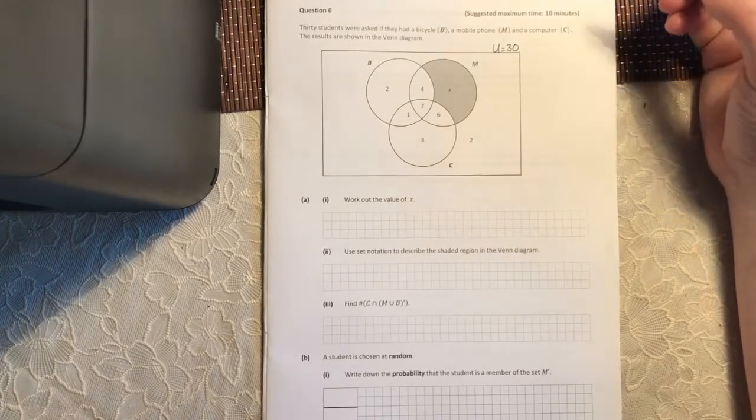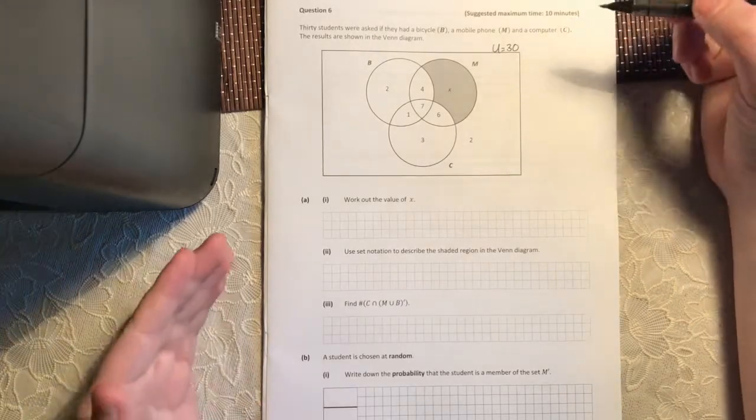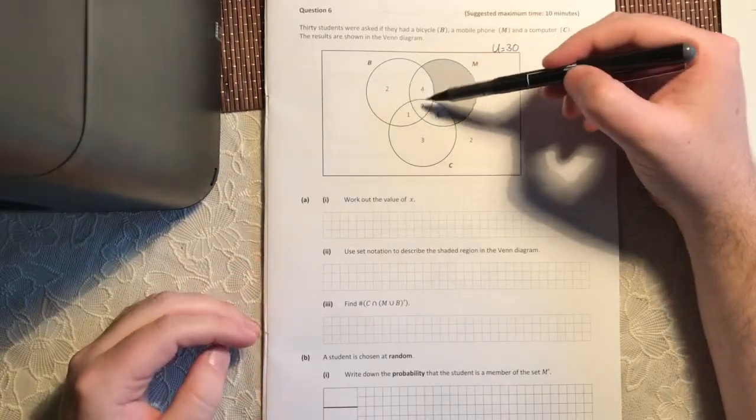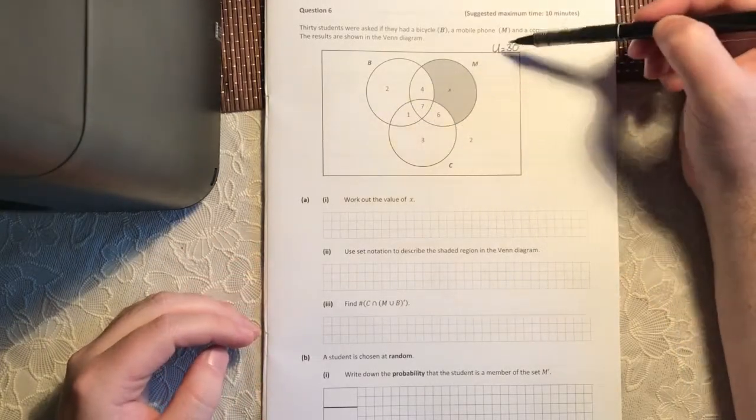So work out the value of X. Well, I don't know what X is, alright? But I do know that if I add all these numbers together, including X, I should get 30.